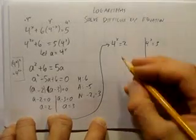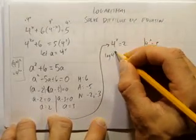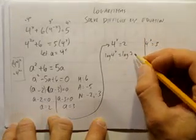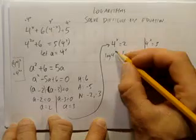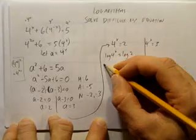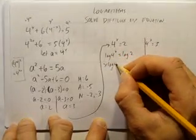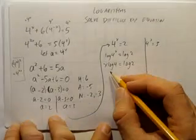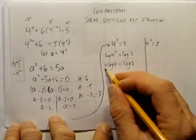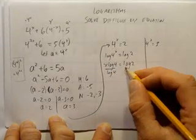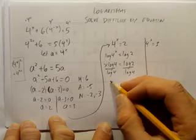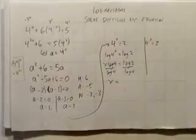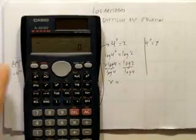Now what? Log both sides. You get log 4 to the power of x equals log 2. How do you solve that? When you have an exponent on a logarithm, you can bring it out in front. And you get x log 4 equals log 2. And how do we get x by itself? Well, it's being multiplied by log 4. So divide both sides by log 4. And the log 4 will cancel out on the left, and you get x equals. And let's try in our calculator,